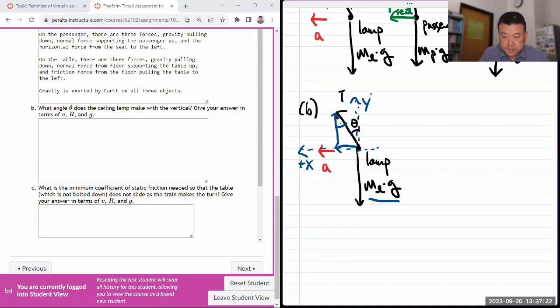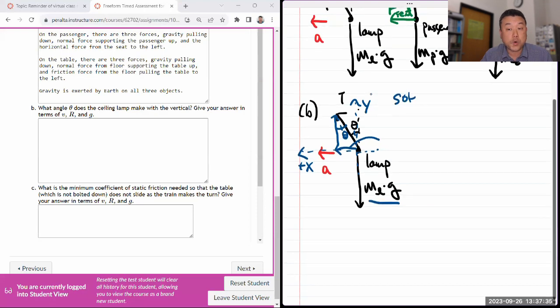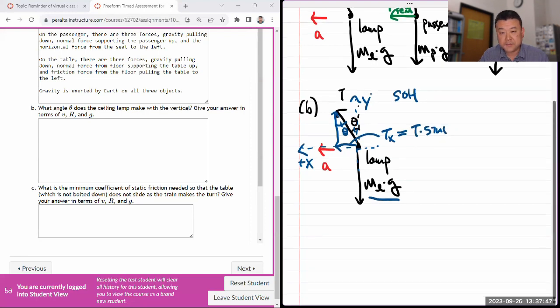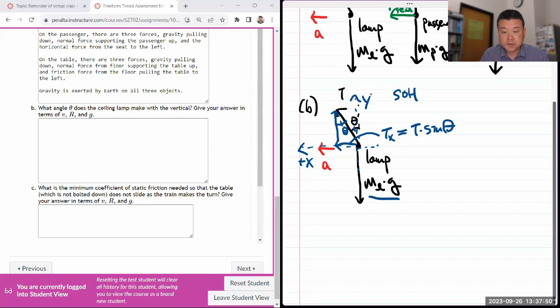Step number three is breaking forces into components. Gravity is already in the y direction. I need to break my tension force into x and y components. My x component is opposite to the angle, so it should be associated with sine. Sine is opposite over hypotenuse, so the component there is T times sine theta. This adjacent side should be cosine. The y component should be T cosine theta. That's step number three.